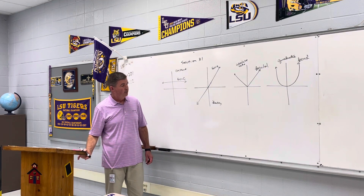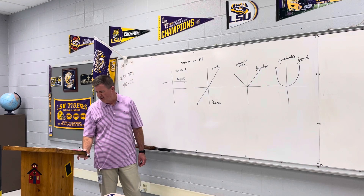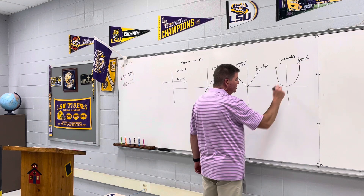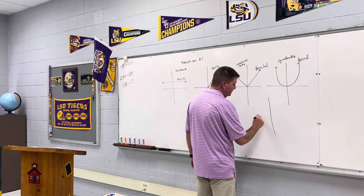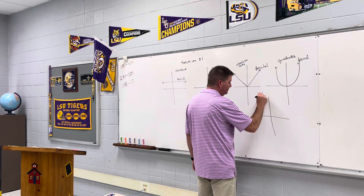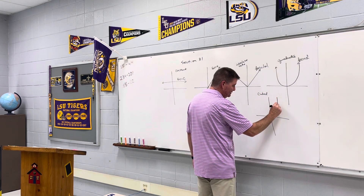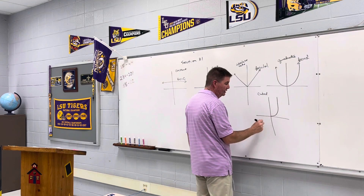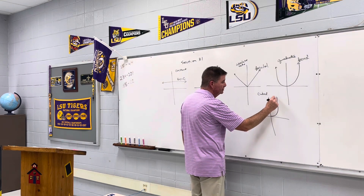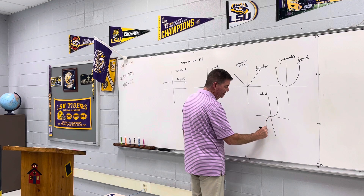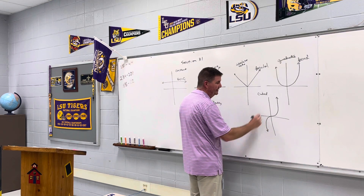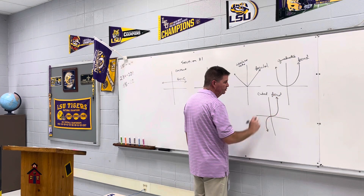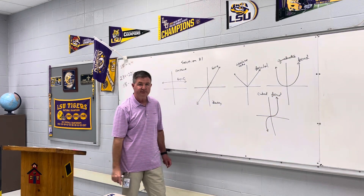The fifth one is the cubed function — instead of x squared, it's x cubed. It looks similar to the parabola on one side, but since it's cubed, a negative number cubed becomes negative, so the graph also extends into the negative side. This is f(x) = x³.